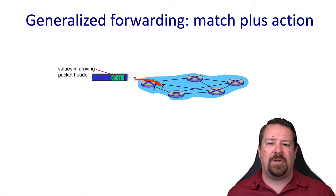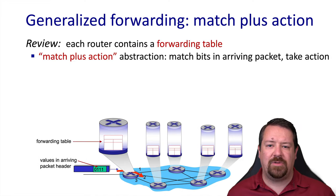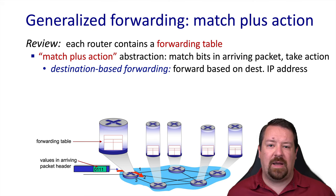So let's look at what we mean by generalized forwarding. We have a packet arriving with its header values, and note we're talking about the whole header here, not just the destination address. The router is going to look in its forwarding table, see what fields that packet matches, and take the corresponding forwarding action.